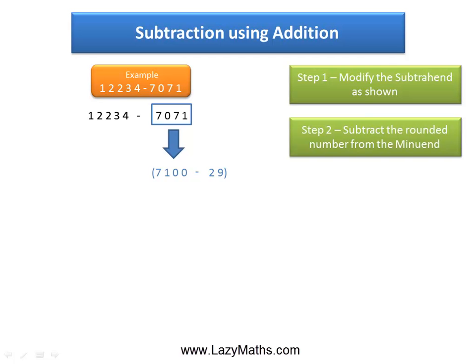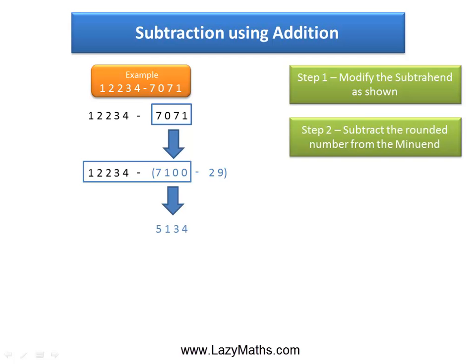In other words, 12234 minus 7100, which is easy to do, and the answer for that is 5134.